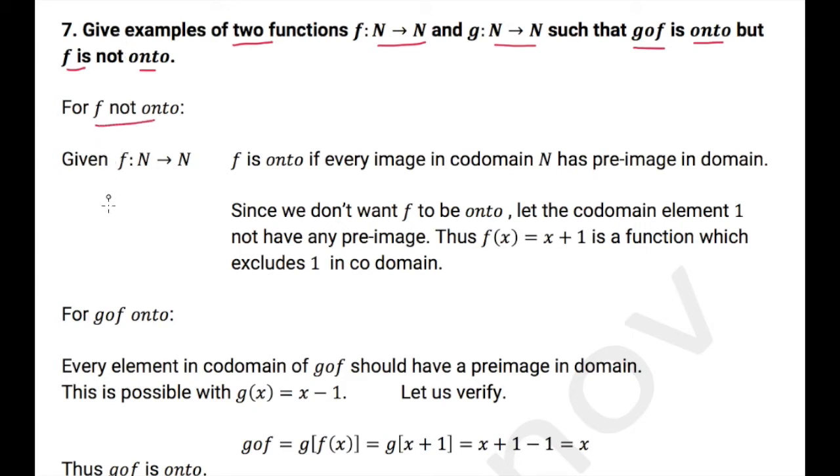It is given f is not onto and f is N to N. We know f is onto if every image in codomain has pre-image in domain. I have domain here, I have codomain here, I have pre-images here and I have different images here. So every image in codomain should have a pre-image in domain.